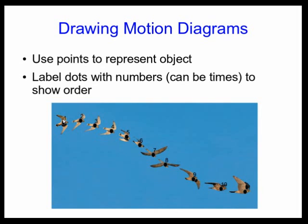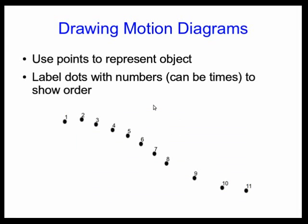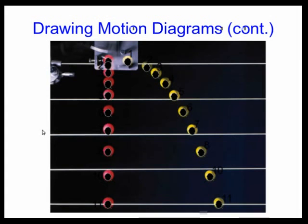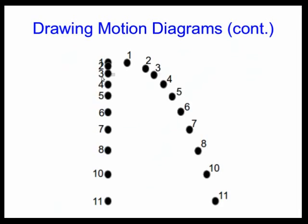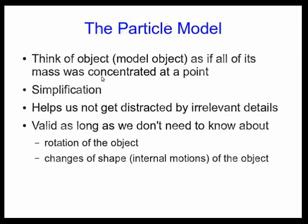And that's just to make clear which way the object is going. Now, in fact, we don't have to include those numbers. Later on, we'll put in velocity vectors, but for now we'll put in these numbers to show the order. And so there's what the motion diagram for the falcon would look like, just the dots with the numbers. Here's another one. Here are two balls, one being dropped and one being shot out to the side. And so there's the motion diagram of them.